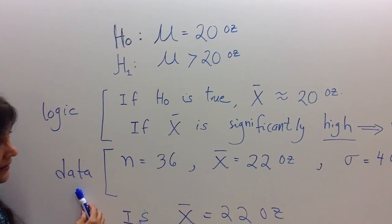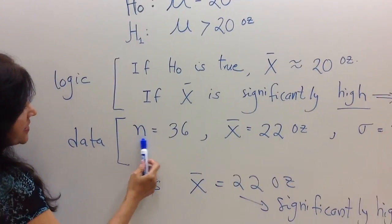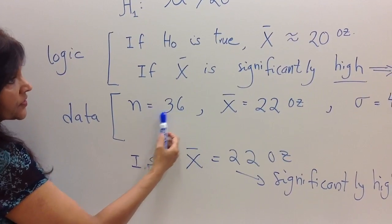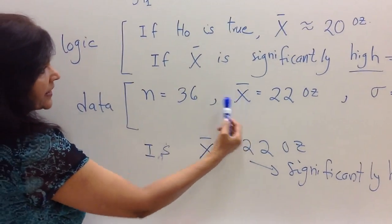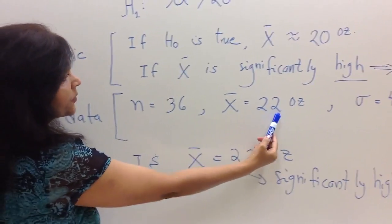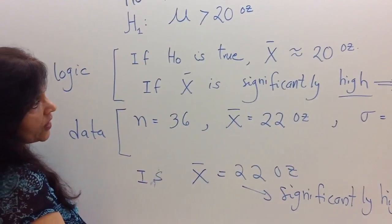So now we collect the data. Let us suppose that we took a random sample of 36 products, and we calculate the sample mean. And let us suppose that the sample mean is 22 ounces.